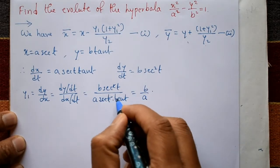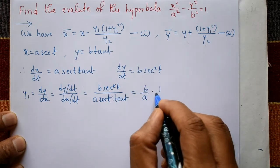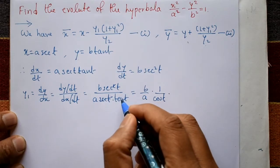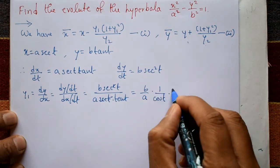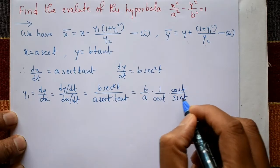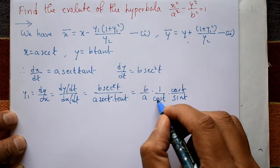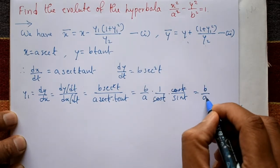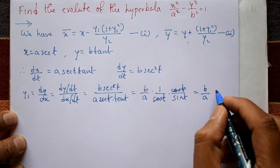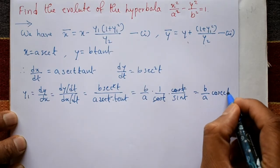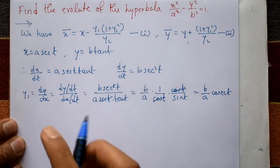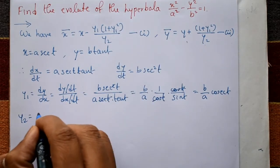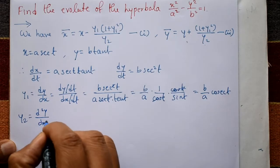Continuing the simplification: sec(t) means 1/cos(t), and 1/tan(t) means cot(t) = cos(t)/sin(t). The cos(t) terms cancel, so y1 = b/a · cosec(t). This is y1. Next we need y2, the second order derivative d²y/dx², which means differentiating dy/dx again with respect to x.